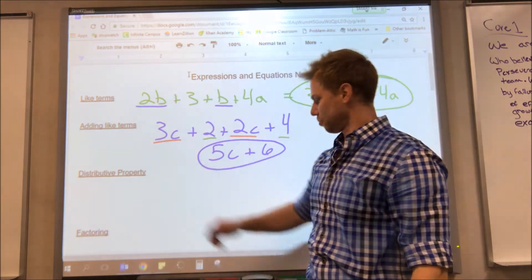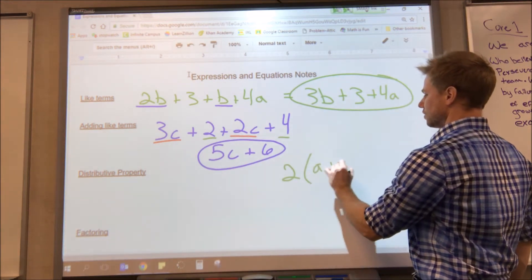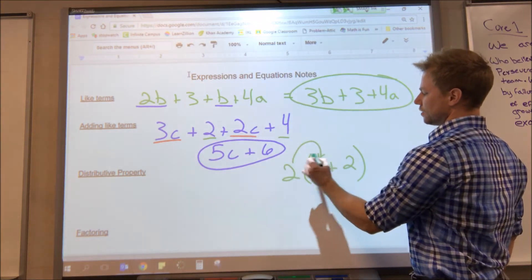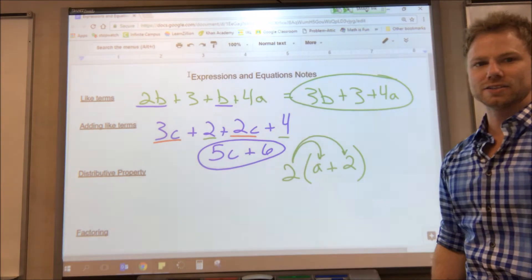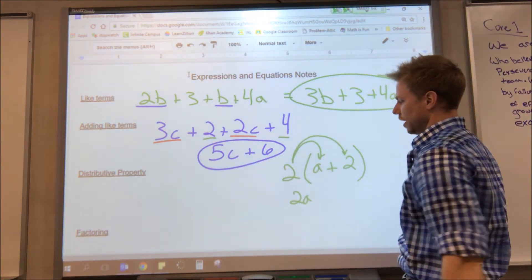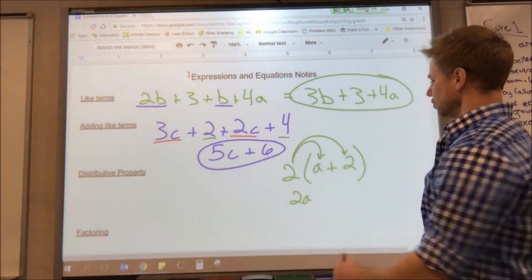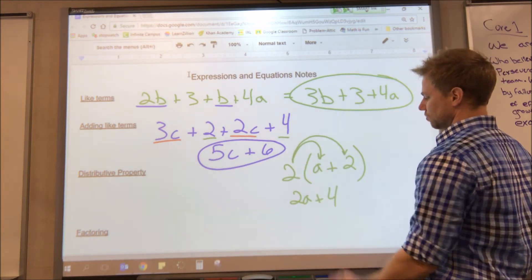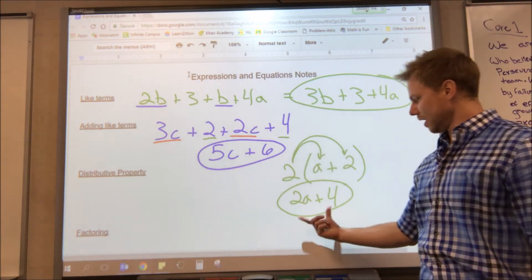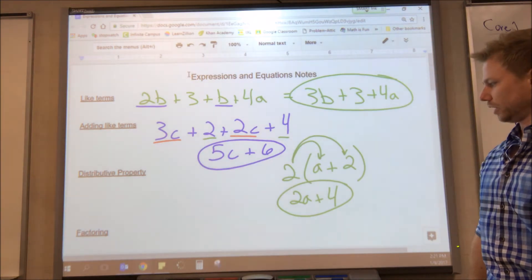A review of the distributive property. If we have a number in front of parentheses like this, the number in front needs to be multiplied by everything inside the parentheses. So 2 times a just becomes 2a, because you have 2 a's, it's 2a. 2 times 2 becomes 4. And that would be all that we do there. We can't add these together because they're not like terms. 2a has an a and 4 doesn't. So that's all that we can do.